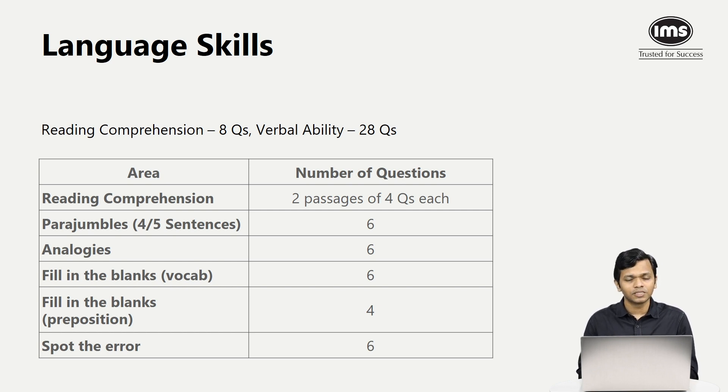Regarding para jumbles, either you had four sentence para jumble or five sentence para jumble. There were total six questions based on para jumbles. As it has been the case previously, there were a lot of questions from vocabulary. Analogies-based there were six questions, fill in the blanks vocab-based there were six questions, and fill in the blanks preposition-based there were four questions.